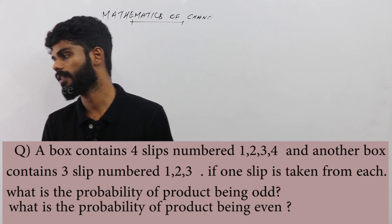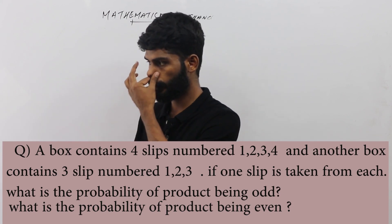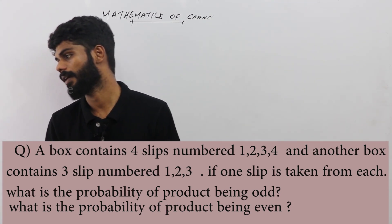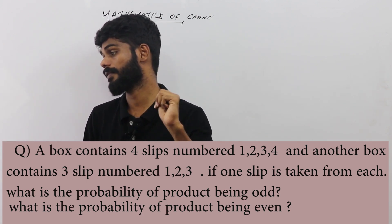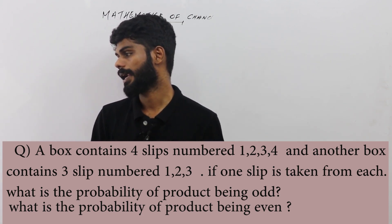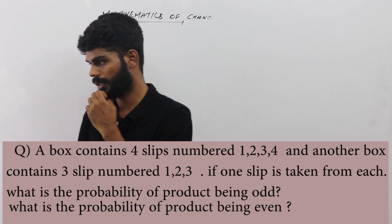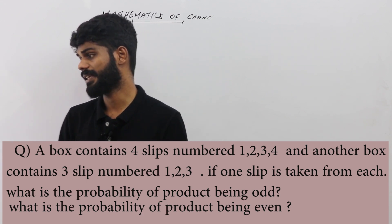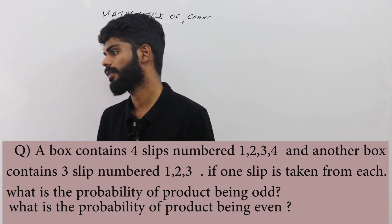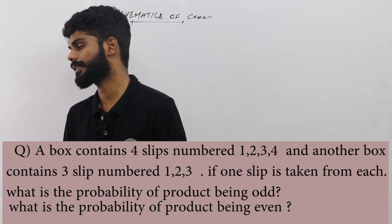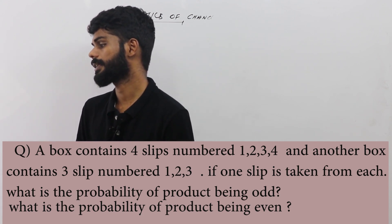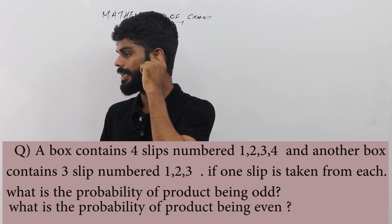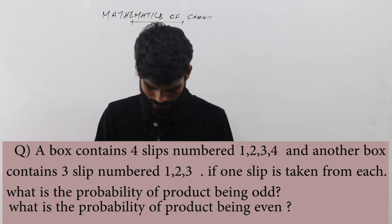A box contains 4 slips numbered 1, 2, 3, 4 and another box contains 3 slips numbered 1, 2, 3. If one slip is taken from each, what is the probability of the product being an odd number? What is the probability of the product being an even number?